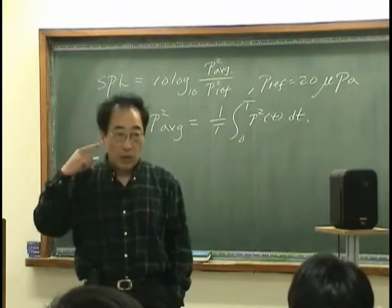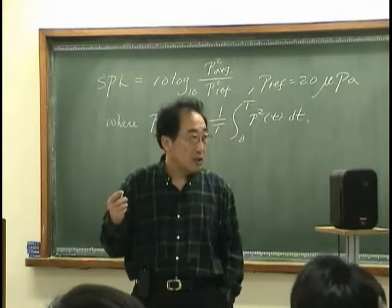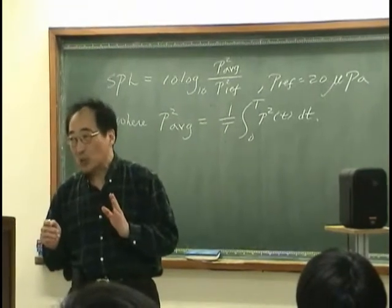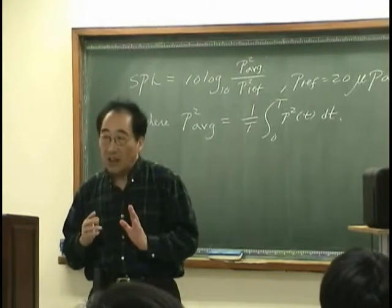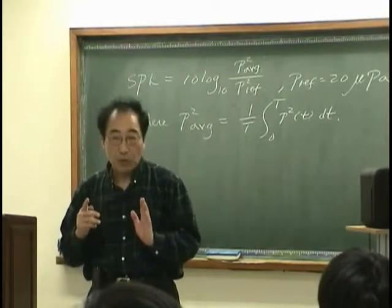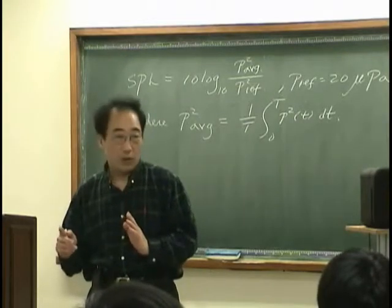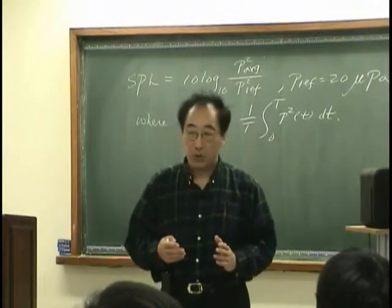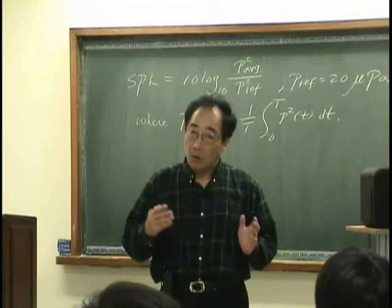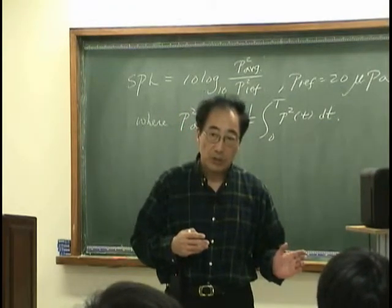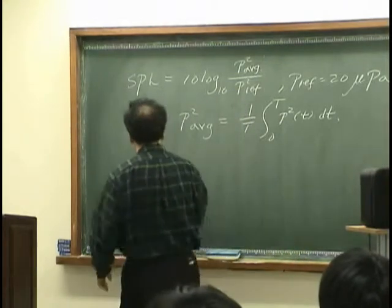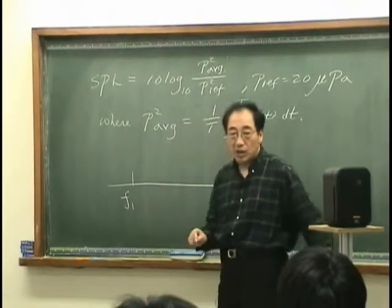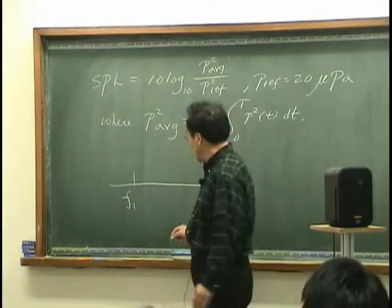We found that what we hear in frequency scale is not with respect to linear scale. In other words, it's not easy to distinguish between, say, 1 kilohertz and 1.1 kilohertz and 1.2 kilohertz or 900 hertz. But we can certainly distinguish between 1 kilohertz and 500 hertz or 250 hertz. Therefore, the frequency scale is scaled by not linear scale, but in logarithmic or octave scale.